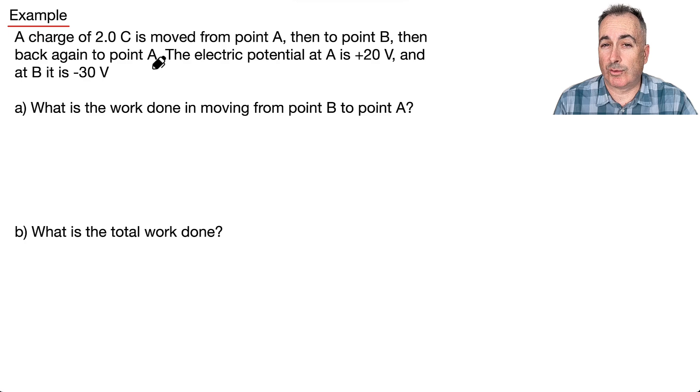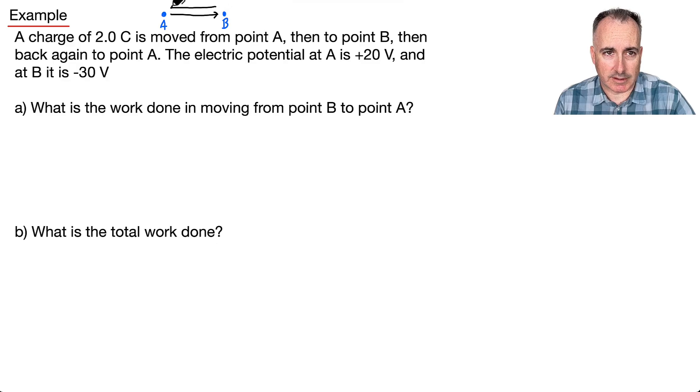Now, here's one that looks way worse. But I'll tell you what, it's actually not nearly as bad as it seems. These are very common on exams. That's why I put this one. So we have a charge of 2 coulombs, and it's moved from point A. You have to imagine some made-up place. So there's a made-up place called A, and there's a made-up place called B. It goes from A to B, and then what happens? Then it goes back to A again.